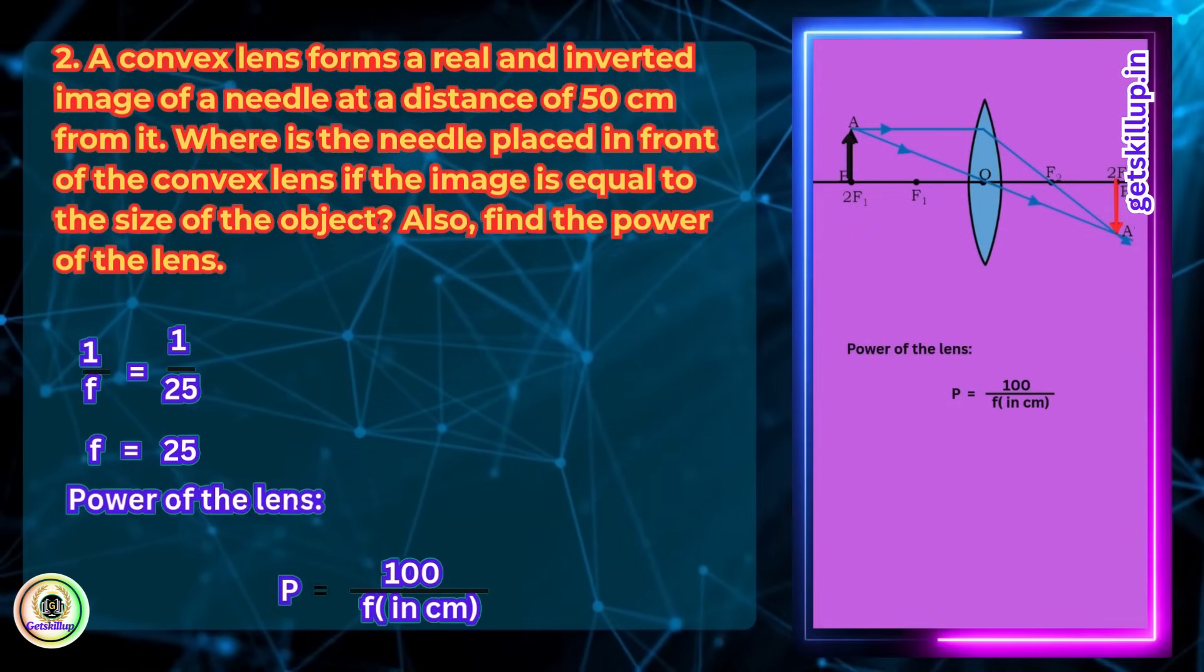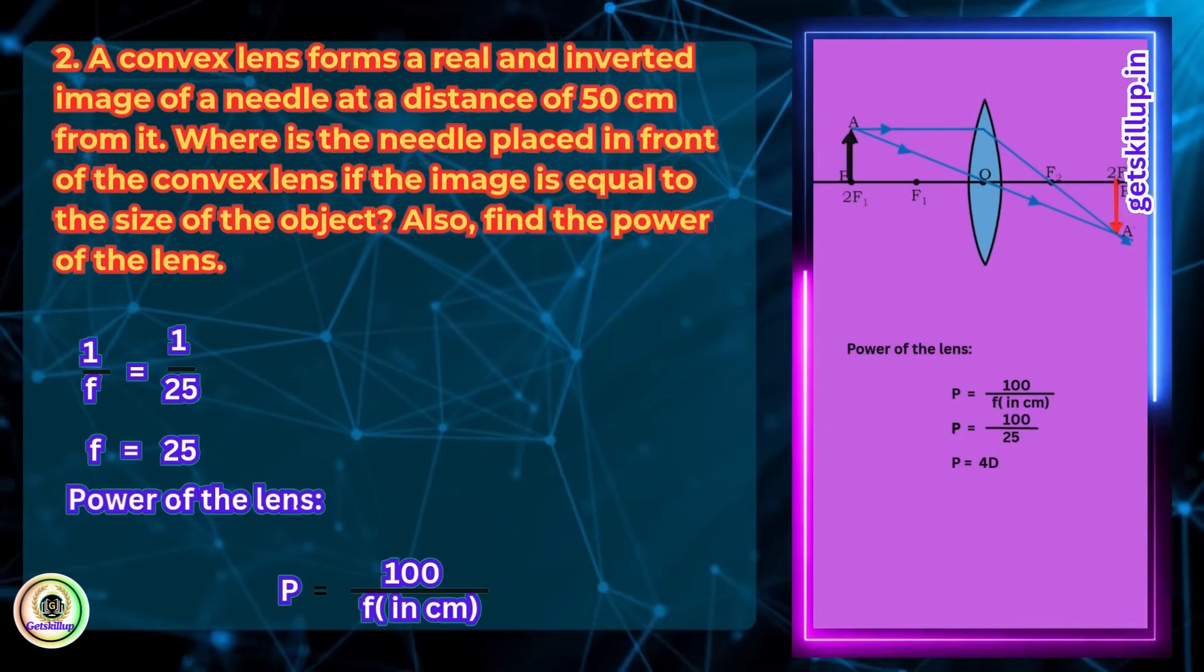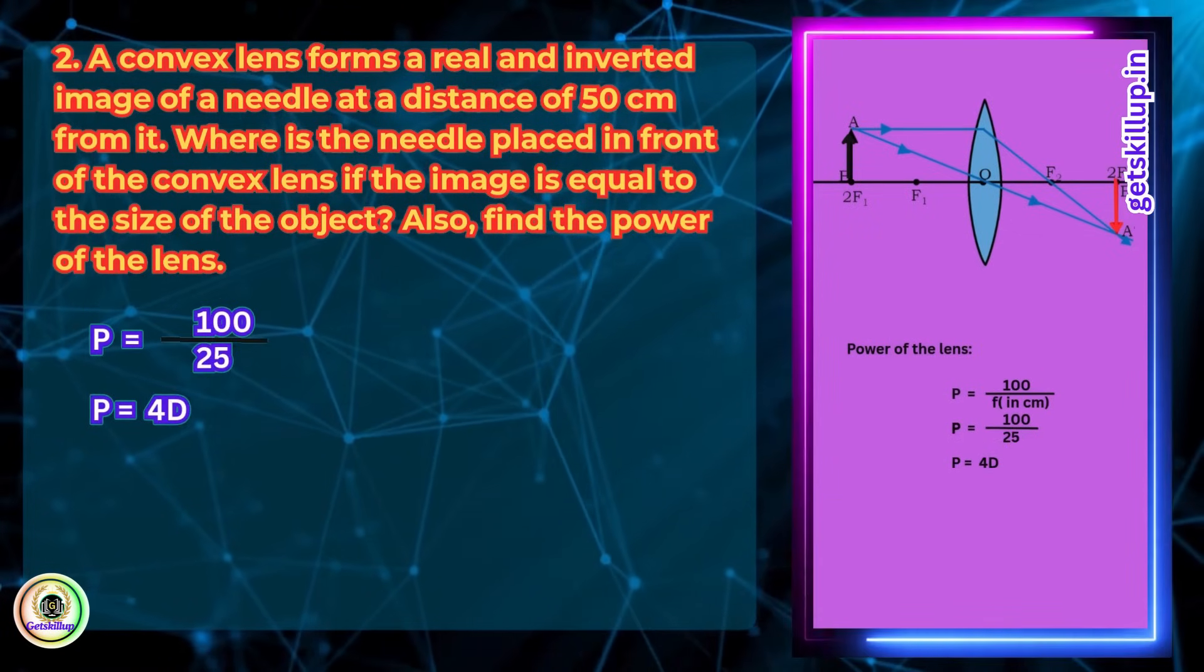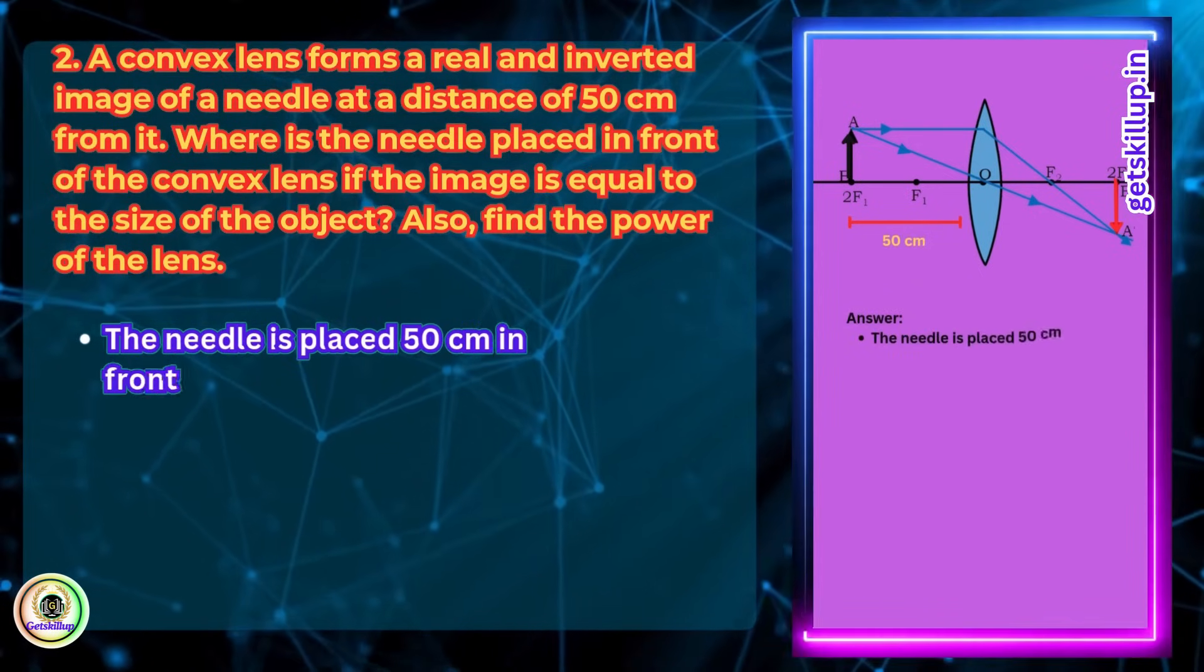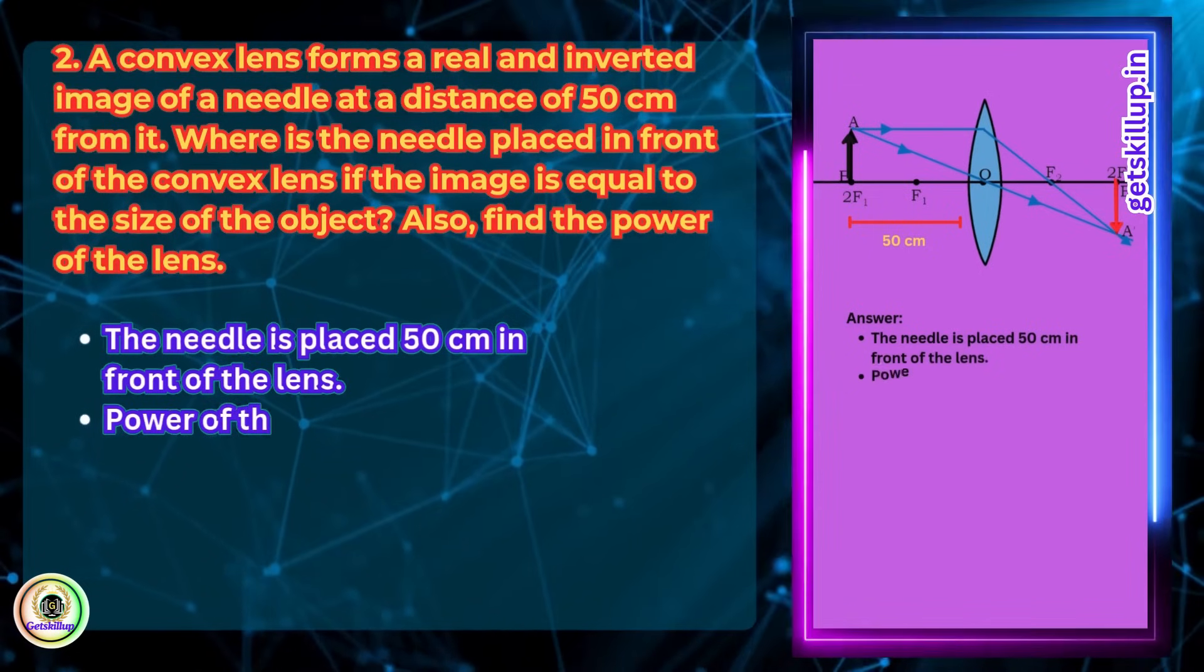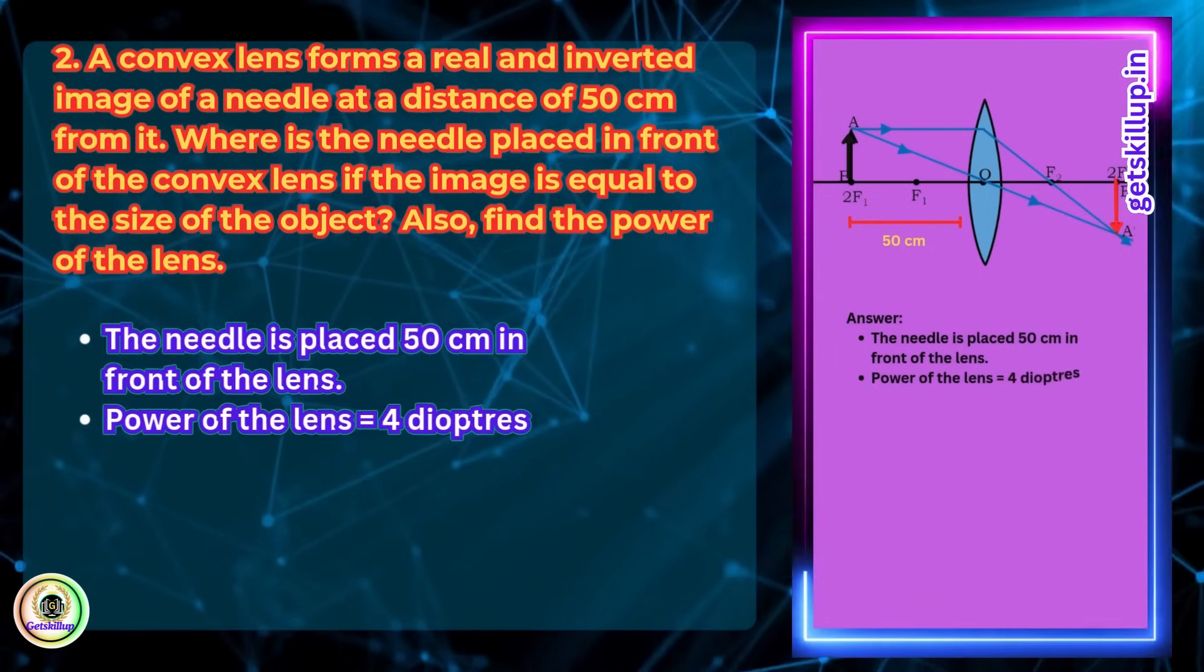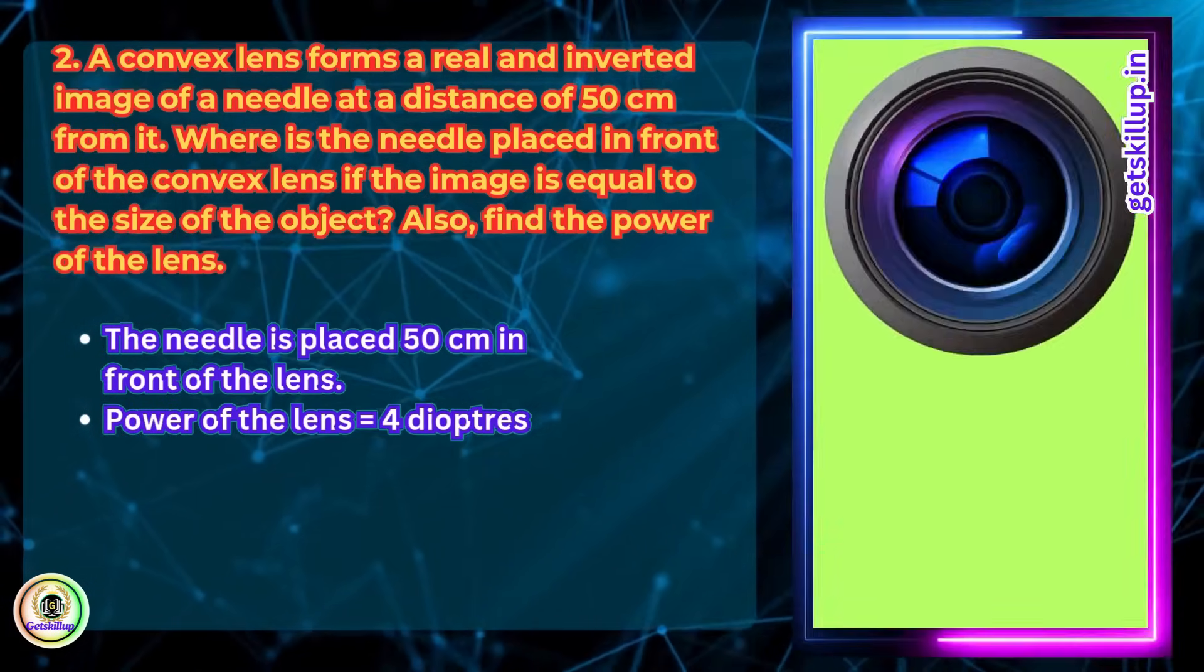= 100/25 = 4D. The needle is placed 50 cm in front of the lens (object is placed at 2f). Power of the lens is 4 diopters.